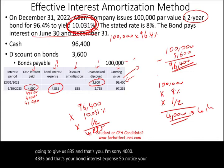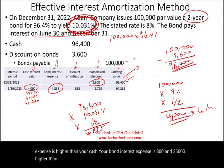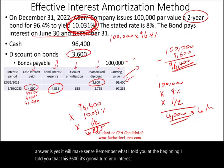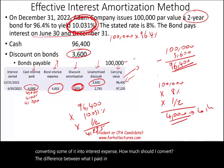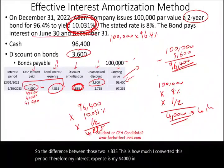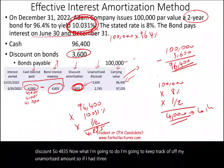Notice your bond interest expense, $4,835, is higher than your cash payment of $4,000. The difference is $835. This makes sense because the $3,600 discount is being converted into interest expense. This period, I converted $835 of the discount into interest expense. So bond interest expense equals $4,000 cash plus $835 of discount amortization. The unamortized discount goes from $3,600 down to $2,765, and the carrying value goes up from $96,400 to $97,235.